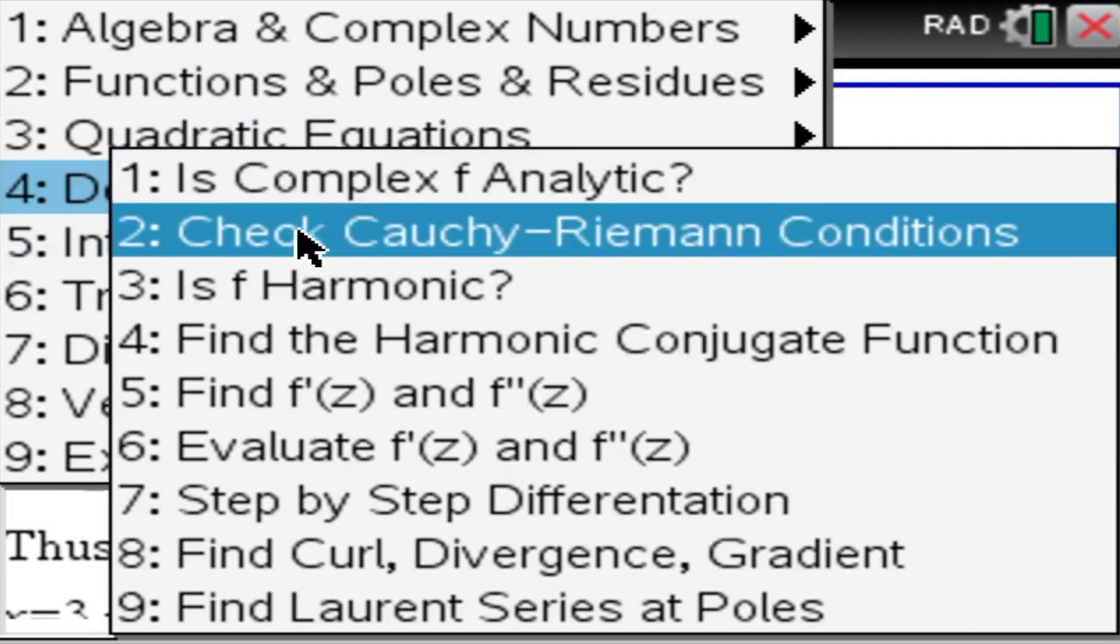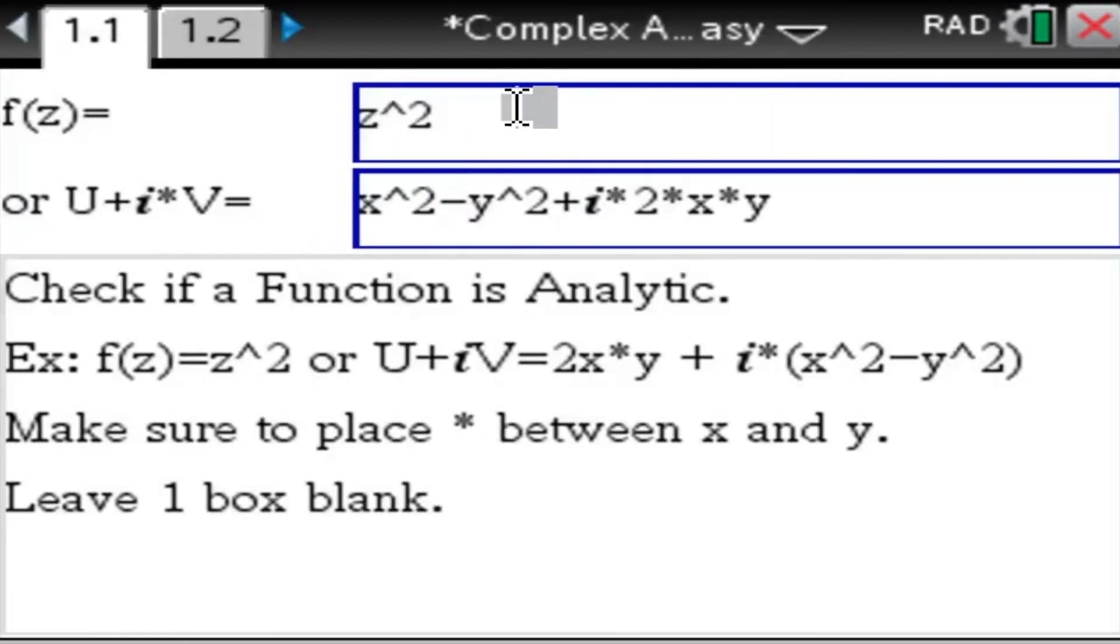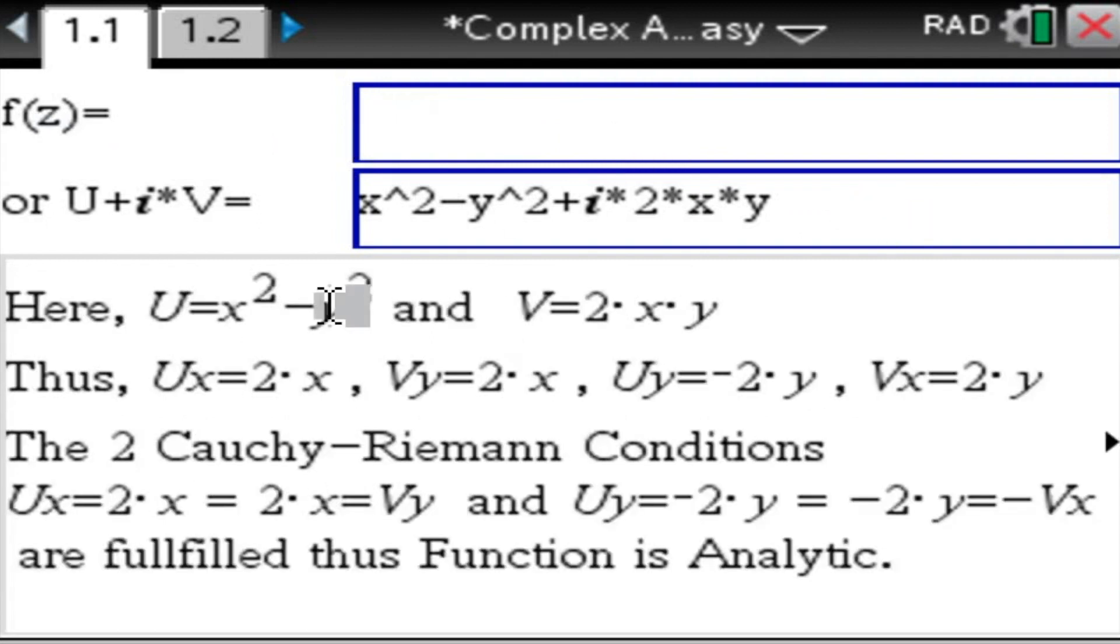Let's do some derivatives. How about Cauchy-Riemann conditions? So we can either enter a complex valued function in this format, u plus i v, or in the format in terms of z. So we have to decide what we do. Let's say we're going to do the bottom version. So we have to clear the top box.